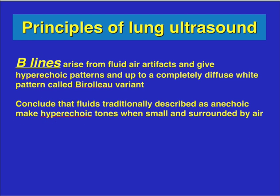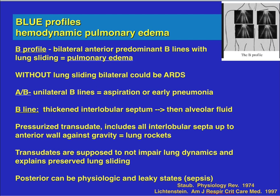B lines arise from fluid-air artifacts and give a hyperechoic pattern, up to a completely diffuse white pattern called a beryl-oeuvariant. Fluids traditionally described as anechoic make hyperechoic tones when small and surrounded by air. A B profile is a hemodynamic pulmonary edema profile. What I mean by profile is you have to have bilateral anterior, predominantly B lines, with lung sliding. That's a pulmonary edema pattern.